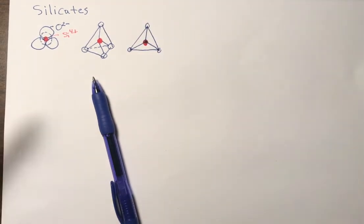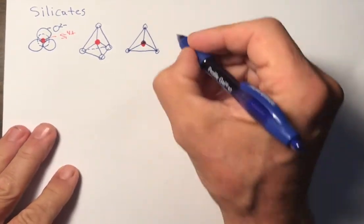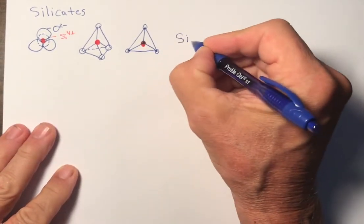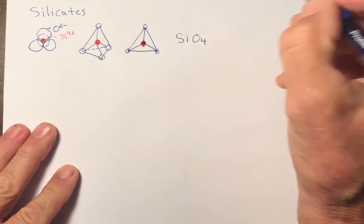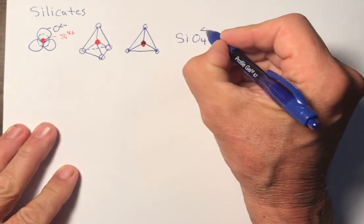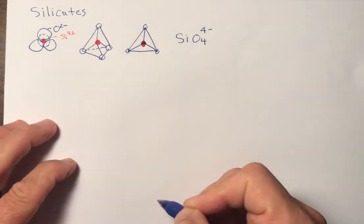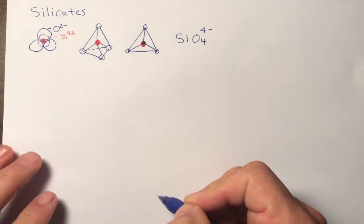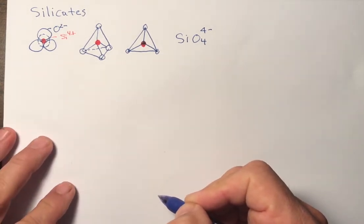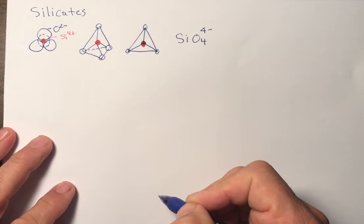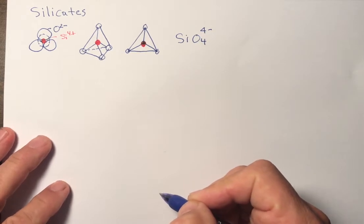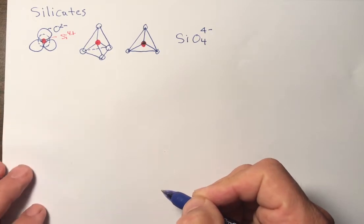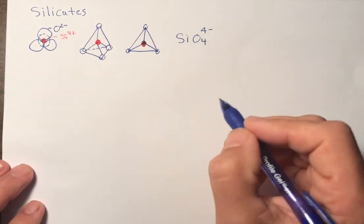So the basic stoichiometry of the silicon tetrahedron is SiO4. And if you add up the charges, this would be a four minus. Silicate minerals, which are the most common ones on earth, more than 95% of those common minerals that include the mantle and the crust, are built around the silicate tetrahedron.